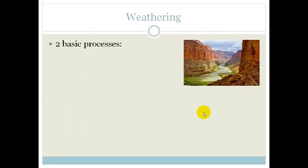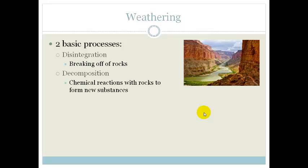One of the things water does is weathering. There are two basic processes for weathering. One is disintegration, which is the breaking off of rocks, and the other is decomposition. Decomposition is when we have a chemical reaction with the salts and other substances in the rocks. If you look at the image, you can see the Grand Canyon, which is due to a lot of weathering over many years.